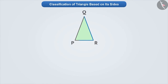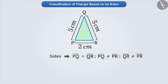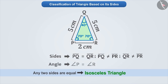Now, look at this triangle. If we take the measurement of its sides, then we find that two of its sides are equal and the third side is not equal to the other two sides. A triangle whose any two sides are equal is called an isosceles triangle. If we measure its angles, then we will know that the angles opposite to equal sides are also equal. This means that two sides and two angles of an isosceles triangle are equal.